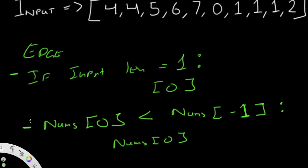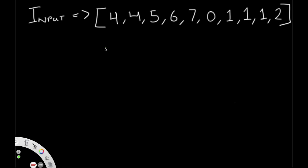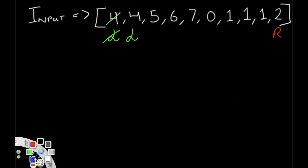If we get past the edge cases, we go into our while loop and do a binary search. Like every binary search, we assign a left value starting at index 0 and a right value at the end of the array. Since the array can contain duplicates, we check for them: if the element before right equals it, that's a duplicate. For left, if the element after it has the same value, we shift the left pointer to the next index and check again.